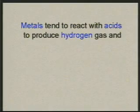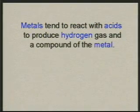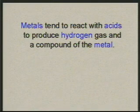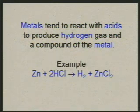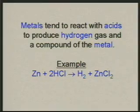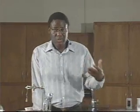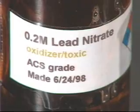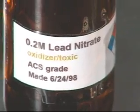One characteristic of metals is that they react with acid to produce hydrogen and a compound of the metal. For instance, hydrochloric acid can react with zinc to give us hydrogen gas and zinc chloride. What we'll be doing today is looking at the reactivity of several metals with acids.